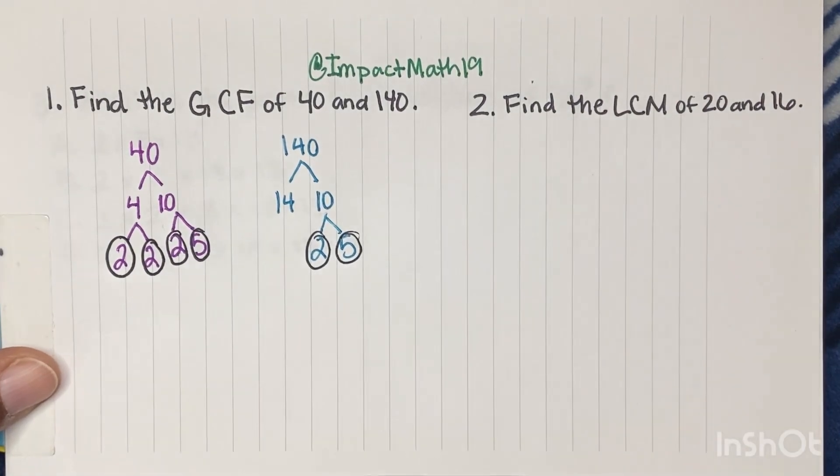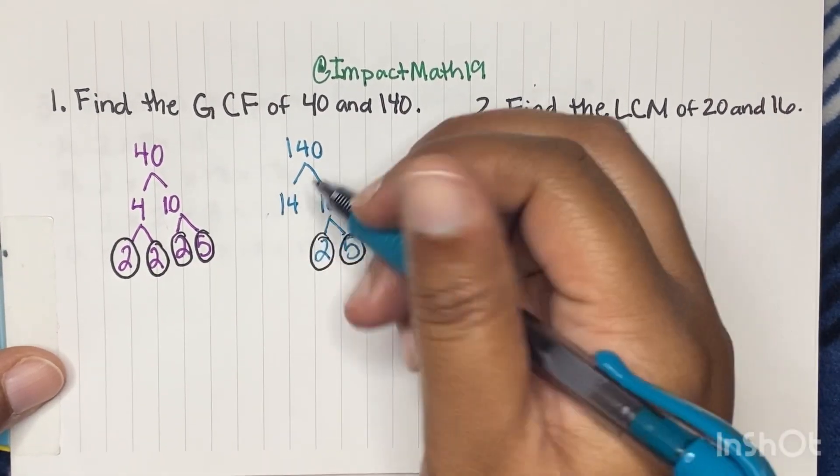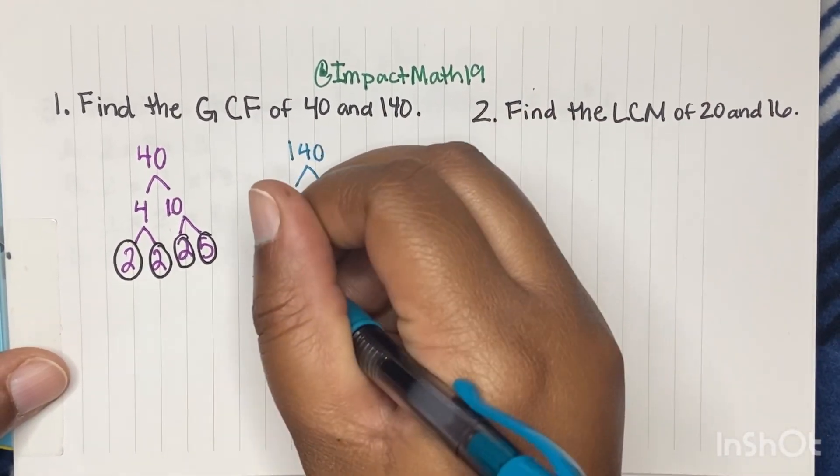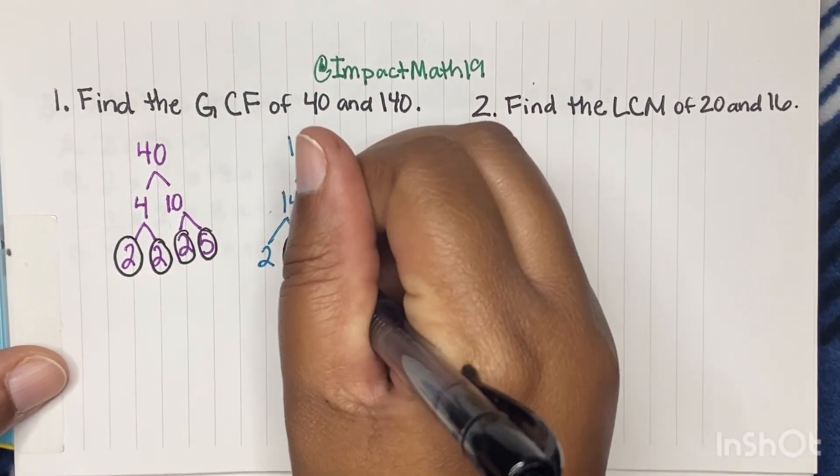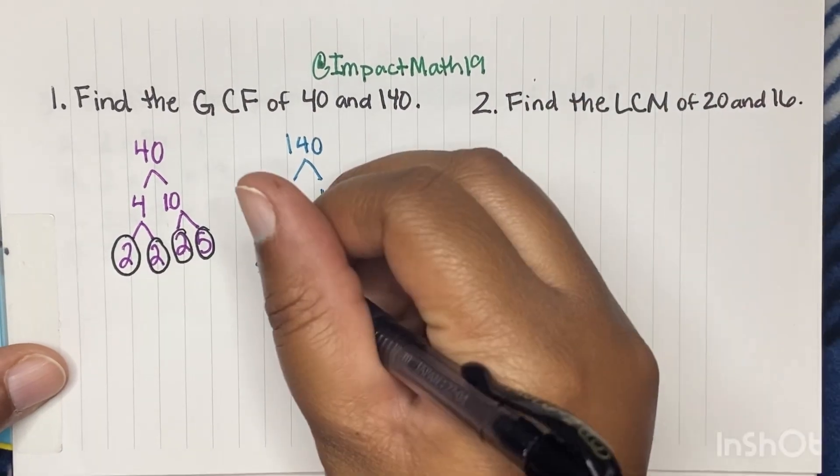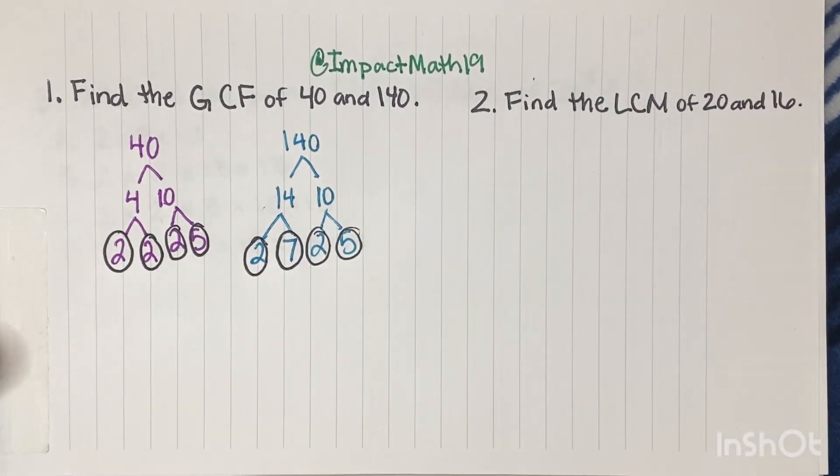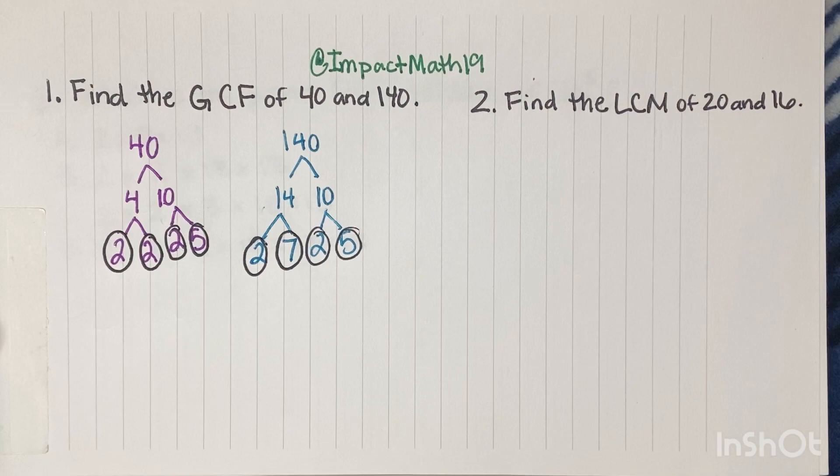Now, what times what gives us 14? Well, 2 times 7. And 7 is a prime because only 1 times 7 gets you 7. And 2. So now, if we list these out,